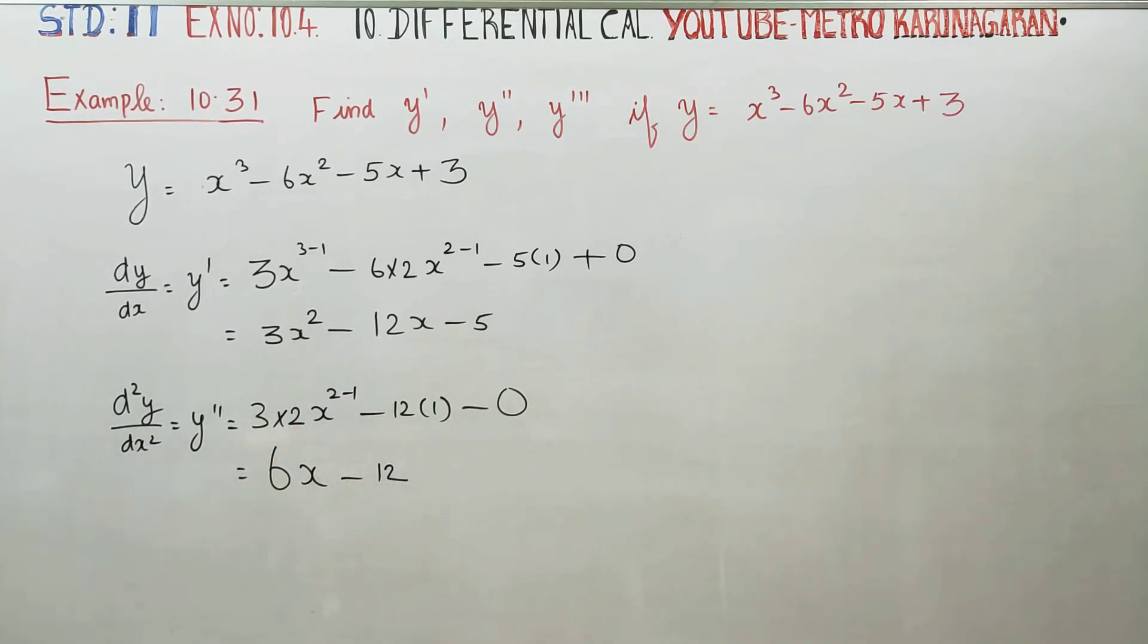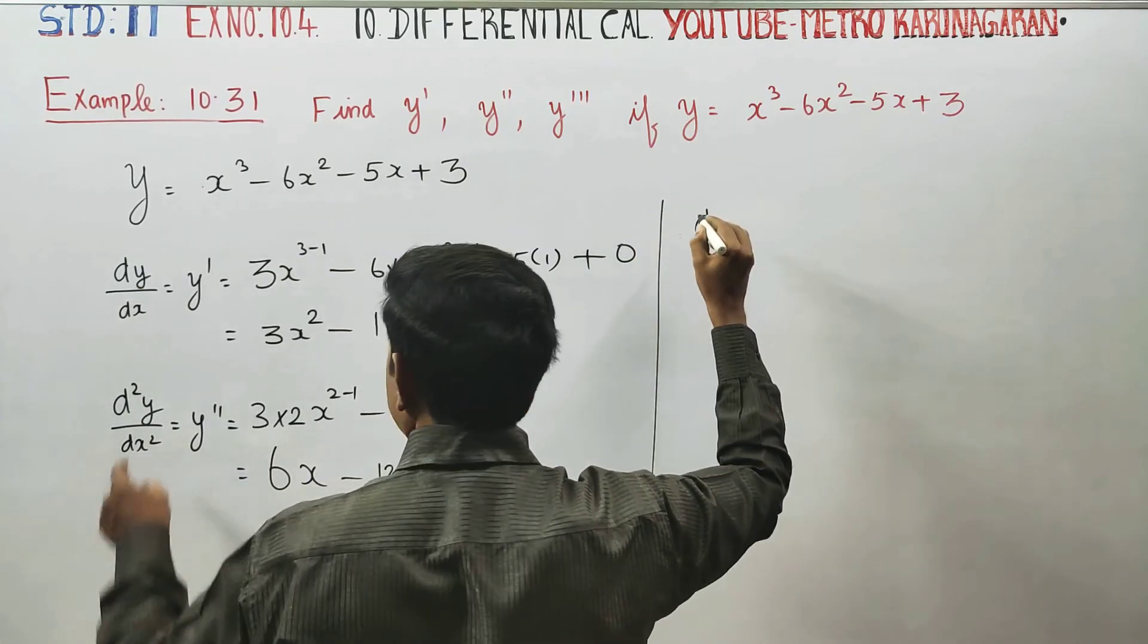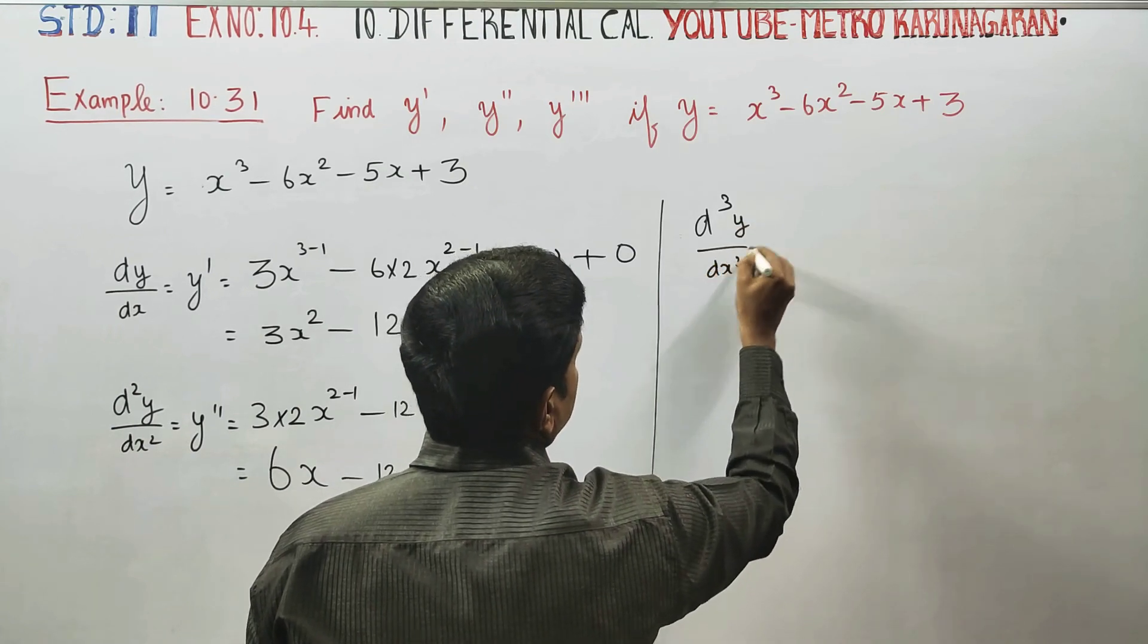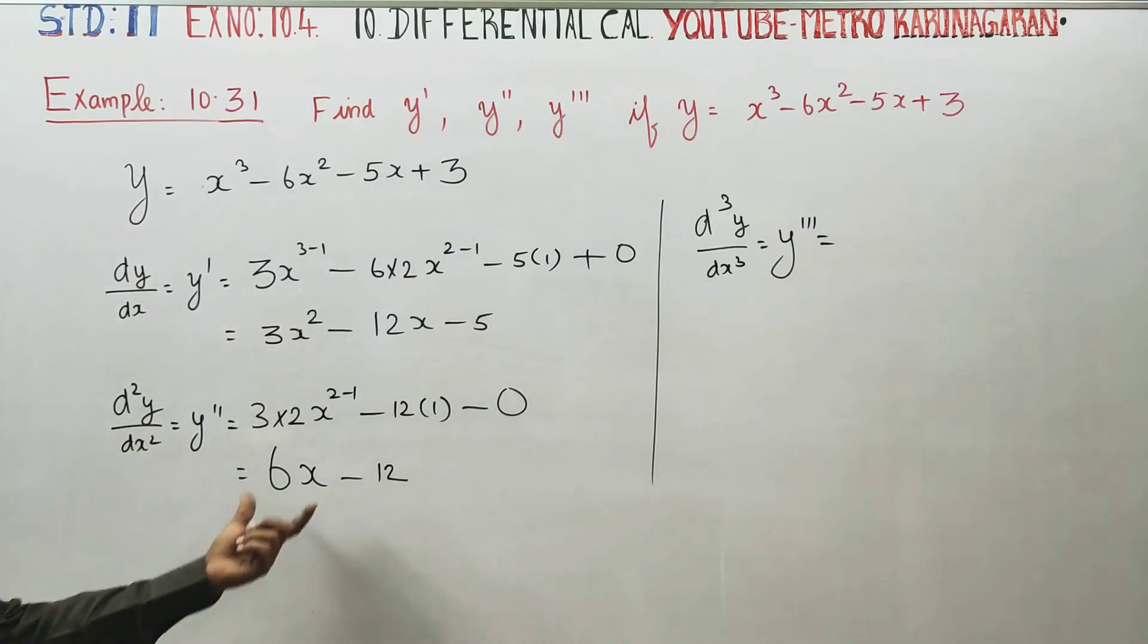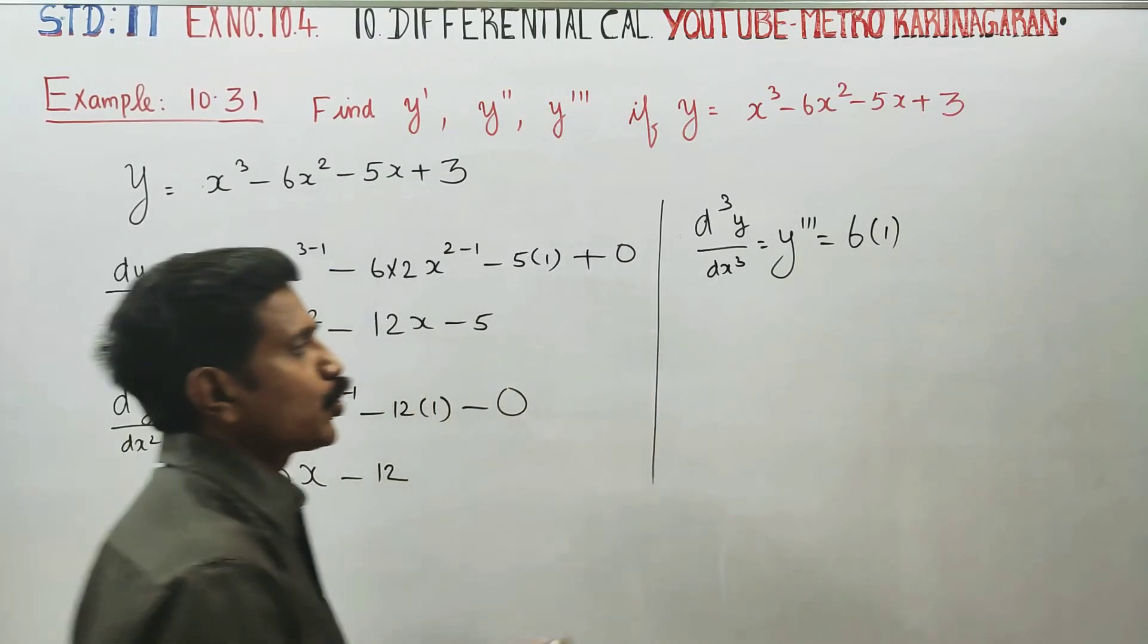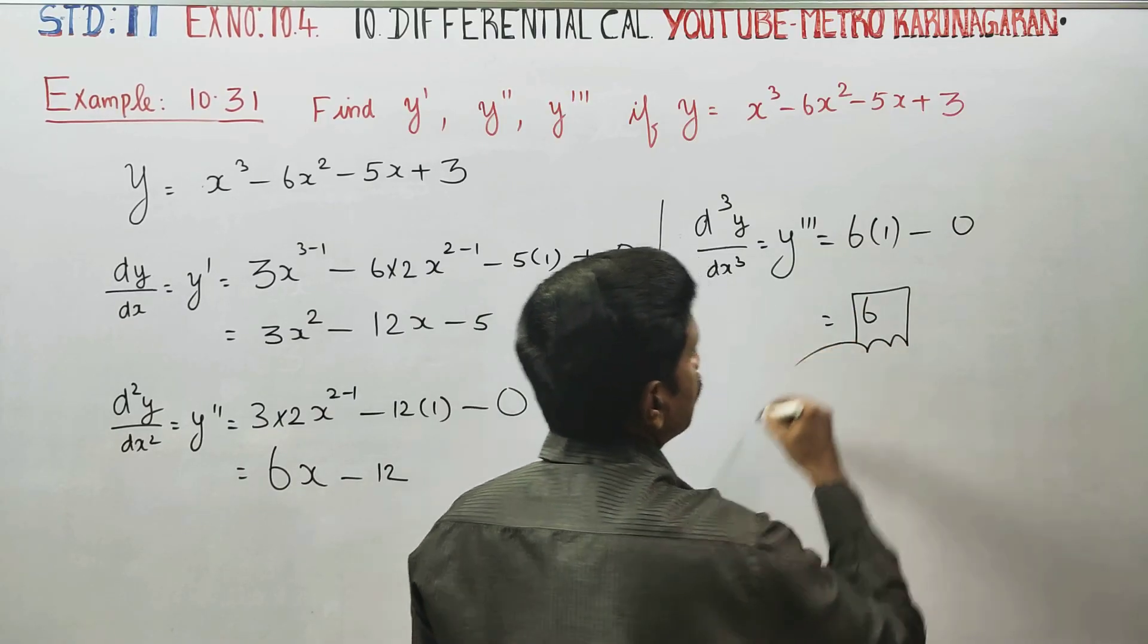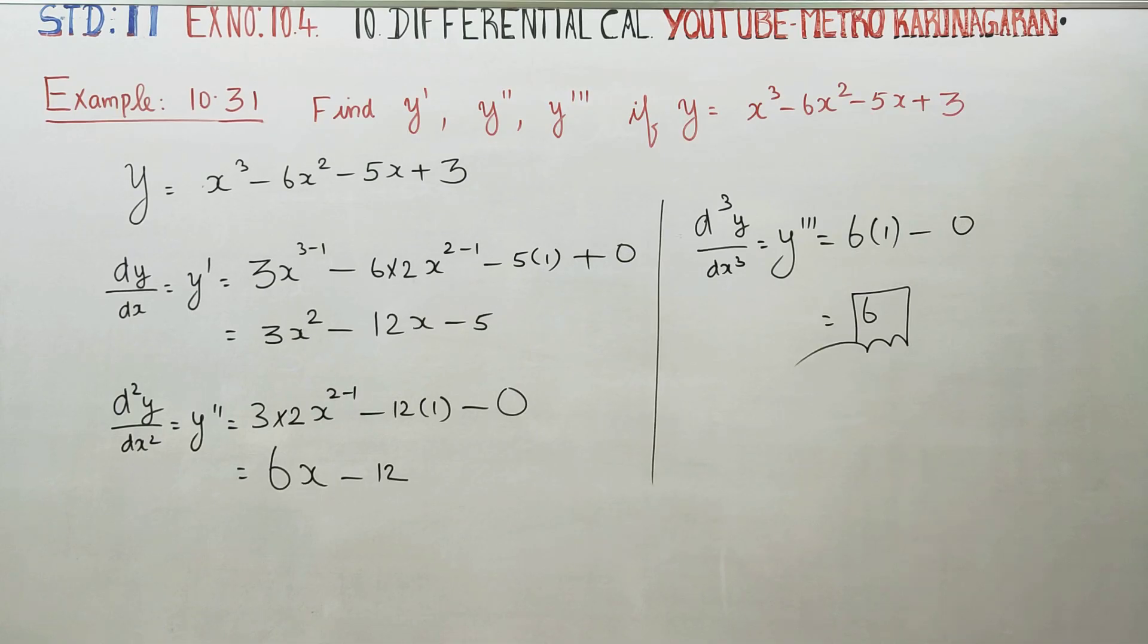Then third order differentiation, d³y/dx³, I say y triple dash. Differentiating: 6x differentiates to 6, constant differentiates to 0. So 6 times 1 is 6. This is y triple dash. This completes the three differentiations: y dash, y double dash, and y triple dash. Thank you.